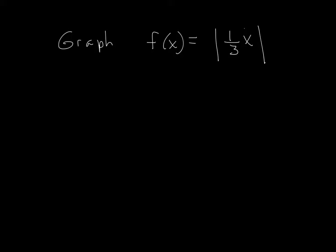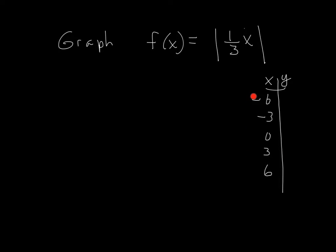There are a couple new things in this next example. First, what if we put the number inside the absolute value instead of on the outside? And second, we now have a fraction. This time, to avoid dealing with a bunch of fractions in the table, we should pick smart numbers. Looking at that one-third, if I put in a one or two I'll get fractional answers — which are fine, but if you're in control of which numbers you pick, why not choose numbers that give you integers instead? So let's use negative six, negative three, zero, three, six.